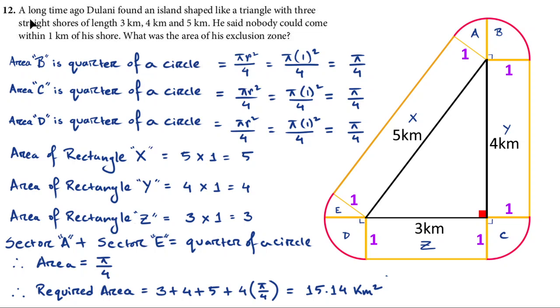In this question it says a long time ago Tulani found an island shaped like a triangle with three straight shores of length 3 kilometer, 4 kilometer and 5 kilometer. He said nobody could come within 1 kilometer of his shore. What was the area of his exclusion zone?